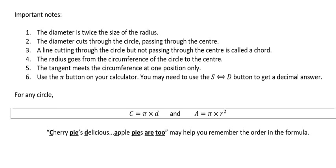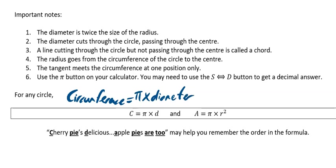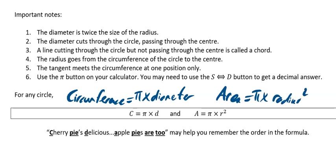For the circle, you've got C is equal to pi times diameter - this is your circumference equals pi times diameter. And then your area is equal to pi times the radius squared. Your D stands for diameter, R stands for radius. There is another formula for the circumference which I'm more fond of using, which is 2πR.